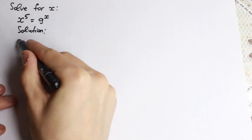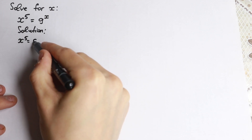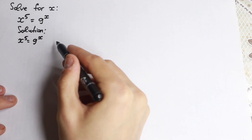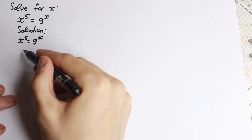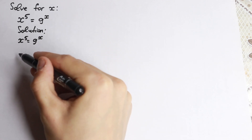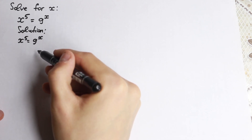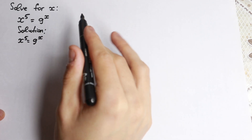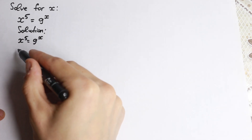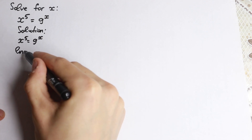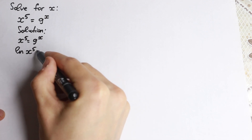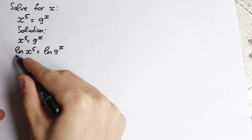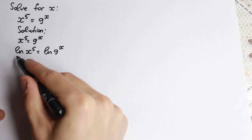So first of all let's write this problem: x to the fifth power equals 9 to the x. When you have exponent powers on both sides, it's really good to take the natural log from both parts. So let's take the natural log on both sides: natural log of x to the fifth power equals natural log of 9 to the x. Nothing changed because we applied the log to both sides.